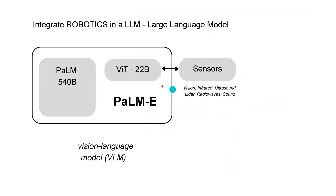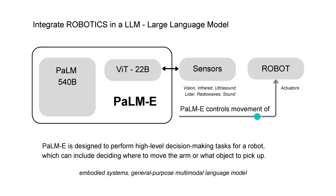What do we do? Easy. We take PaLM — our 540 billion trainable parameter model — we combine it with a vision transformer with 22 billion parameters, and we call the whole thing PaLM-E, E for Embodied. These systems we call vision language models, VLMs, and we put some sensor inputs there. Sensors can be vision sensors, infrared, ultrasound, lidar, radio waves, normal human sound — whatever you have. We build a PaLM-E system whose goal is to control the movement of a robot with different actuators, where the main intelligence is our LLM and our vision transformer. PaLM-E is designed to perform high-level decision-making tasks for a robot, which can include deciding where to move the arm or what object to pick up. In general, we talk about embodied systems or general-purpose multimodal language models.